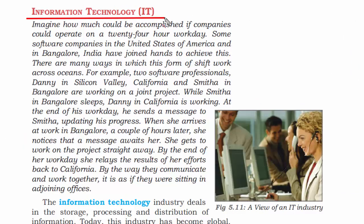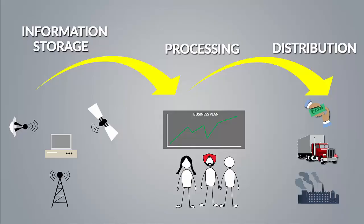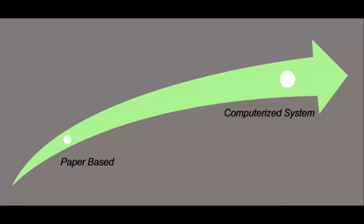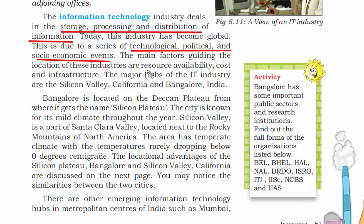The last topic is information technology. The work of IT is storing, processing, and distributing information — it is a support service wherein businesses and services are built using information. The reason behind its expansion is technological, political, and socio-economic events: every country wants to be modern and technologically advanced, and many jobs are being outsourced from developed to developing countries, creating revenue and improving socio-economic factors. Factors affecting location of IT industries include availability of resources, cost, and infrastructure.